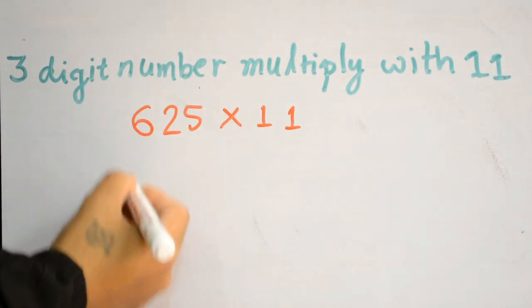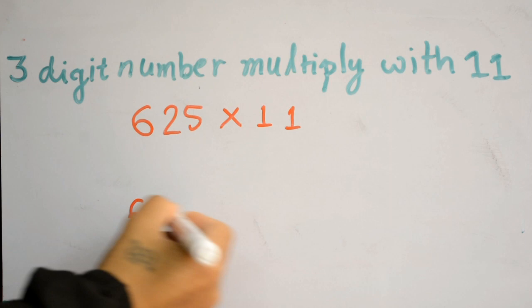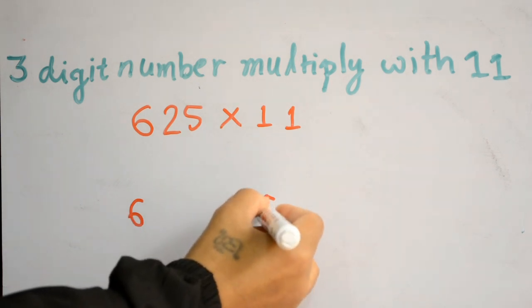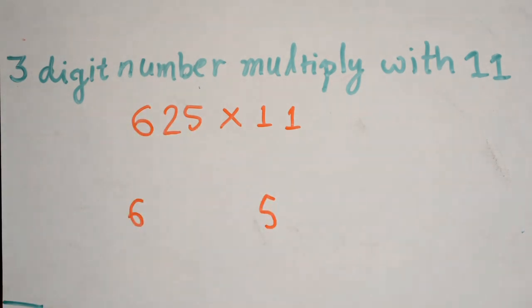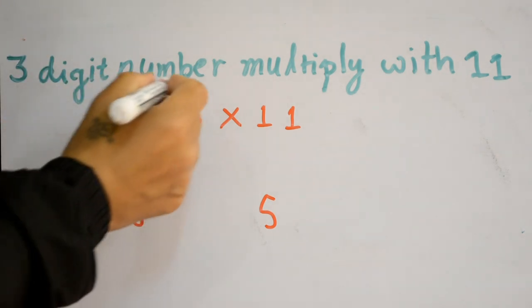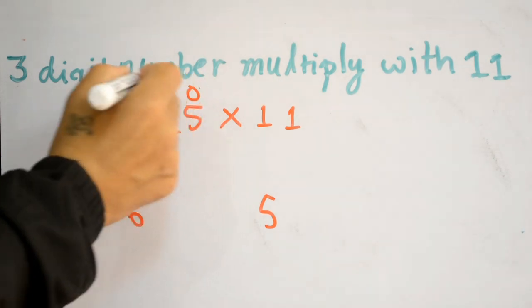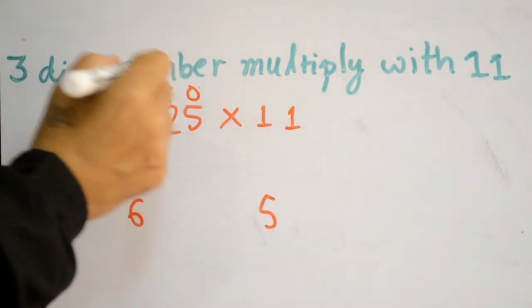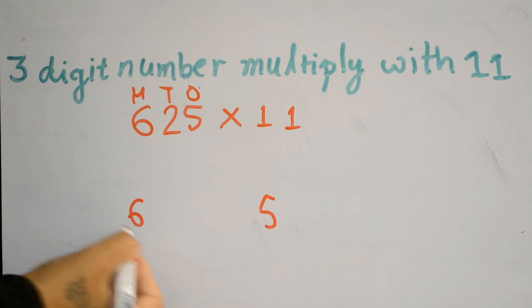...last digit and first digit, which is 6 and 5. The 5 is in the ones place and the highest place is 6 in the hundreds place. This is a three-digit number - hundreds, tens, and ones. We write the hundreds digit...